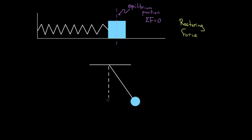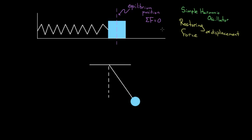There are lots of oscillators, but only some are really special — we call them simple harmonic oscillators. What makes simple harmonic oscillators special is that, even though all oscillators have a restoring force, simple harmonic oscillators have a restoring force that's proportional to the amount of displacement. So if I pull this mass back twice as much, I'd get twice the restoring force; three times as much, three times the force. Same for the pendulum: two times the angle gives two times the restoring force. That's what we call a simple harmonic oscillator.